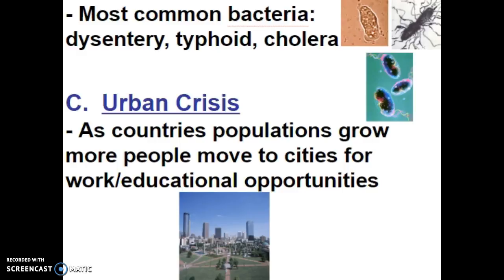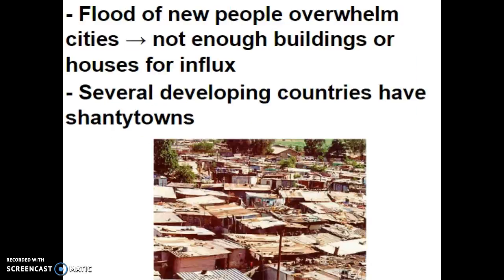As countries' populations grow, what tends to happen is people move from agricultural or rural areas into urban areas. More people move to cities for work opportunities or educational opportunities. We call this the urban crisis, because many developing countries have very little funds to support the infrastructure of the city for the people coming in. The influx of people overwhelms cities, and there are not enough buildings, homes, or places for work for the people arriving.